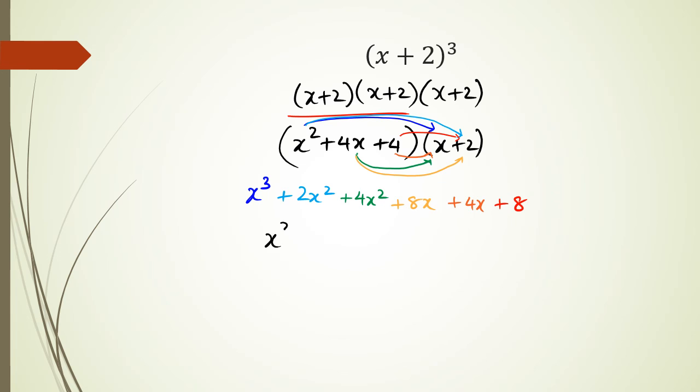Simplifying this, I get x³, and I'm looking for like terms. The x² terms give 6x². Then all the x terms give 12x, and 8 by itself.